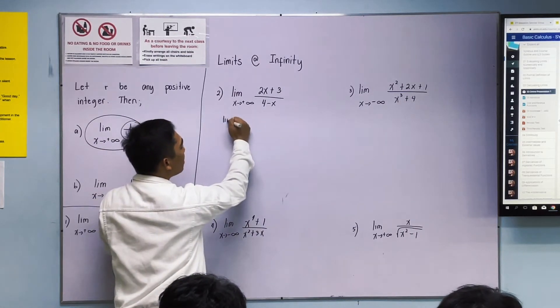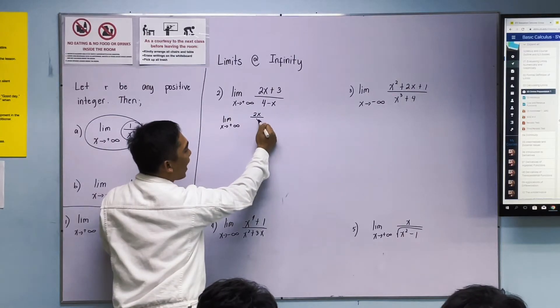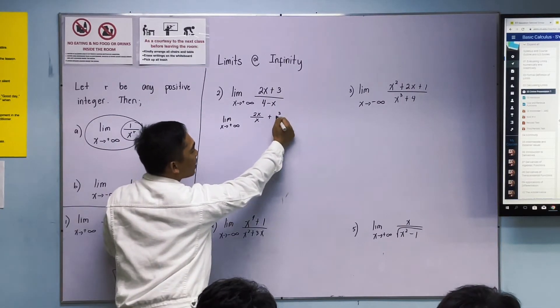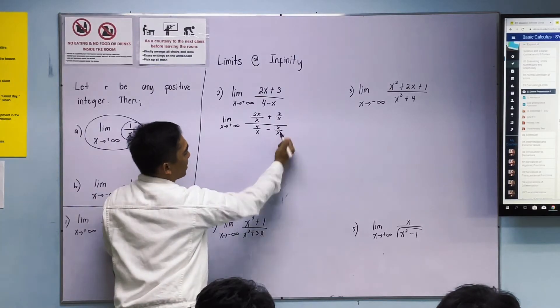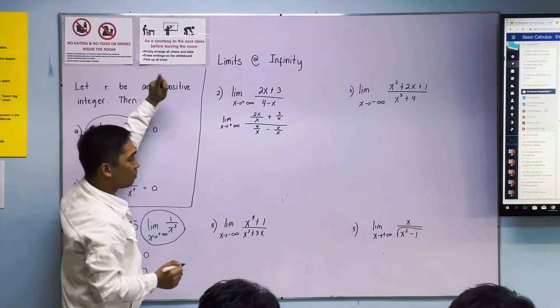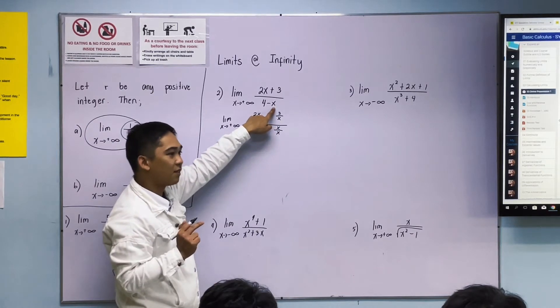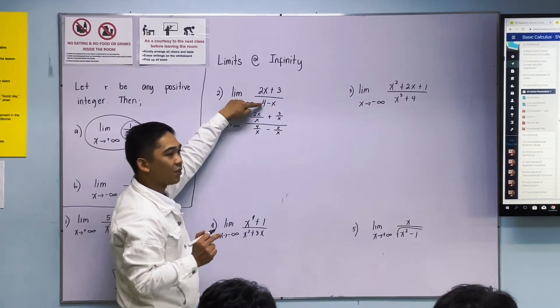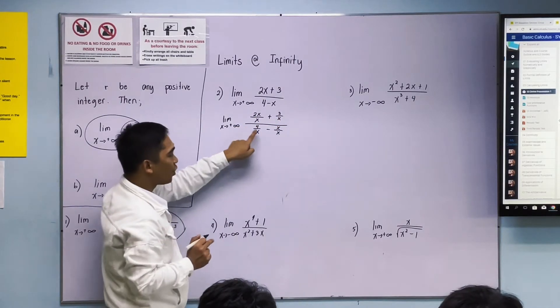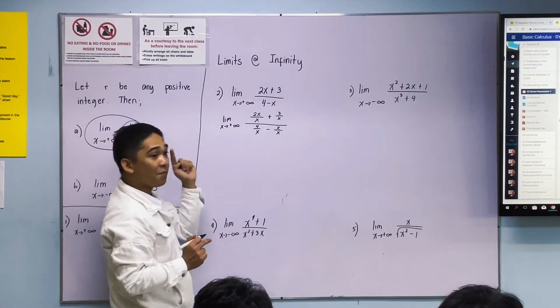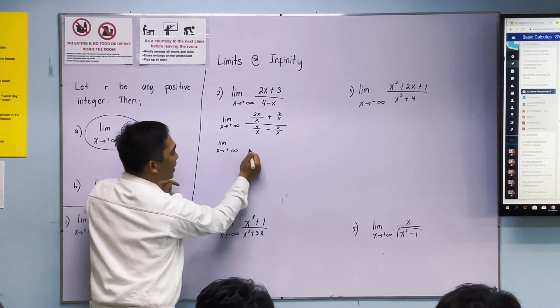Let's do this. We'll copy it first. Limit of: 2x over x plus 3 over x over 4 over x minus x over x. Let's review. Since the variable of the denominator is just x, we divide all terms in both numerator and denominator. That's why we got 2x over x plus 3 over x all over 4 over x minus x over x. Then we simplify.